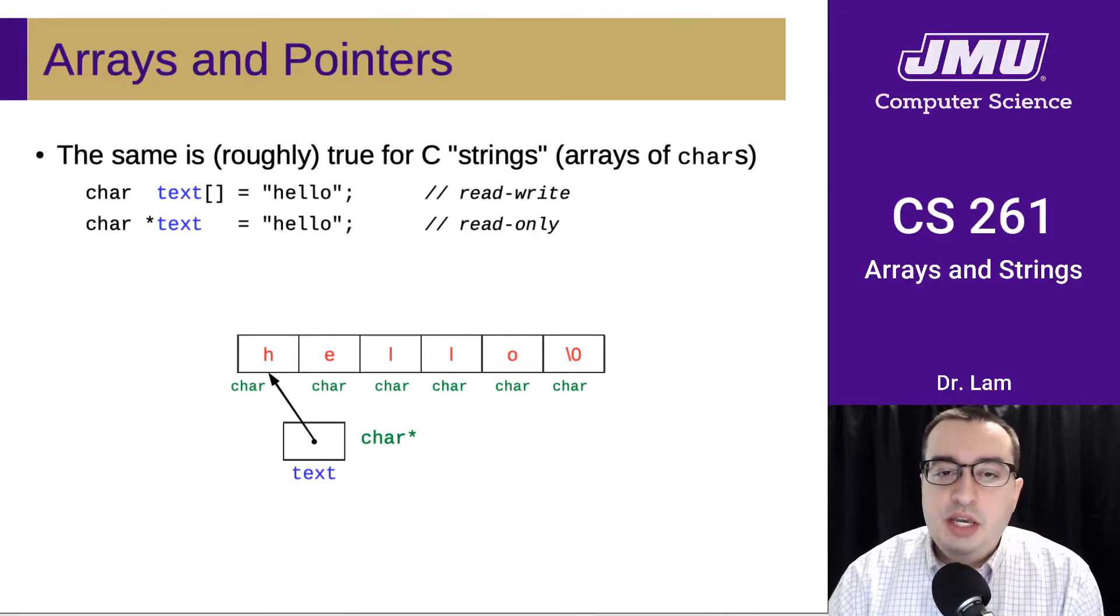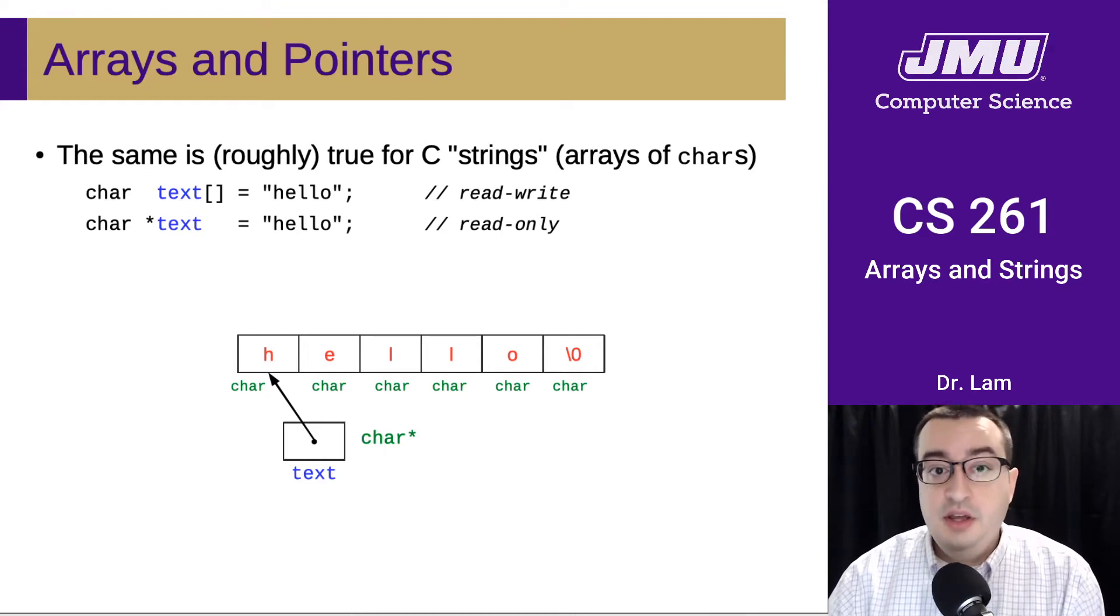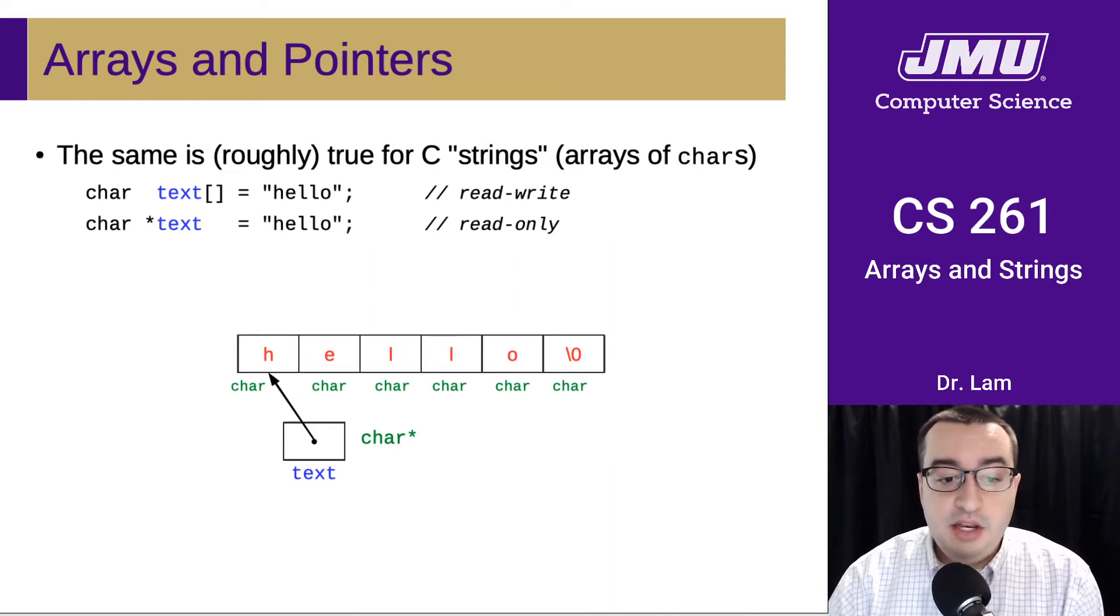With that knowledge, in some sense, strings in C are extremely simple, in that a string in C is really just an array of characters. In particular, they are what we call null terminated, which means they end with this null value at the end.